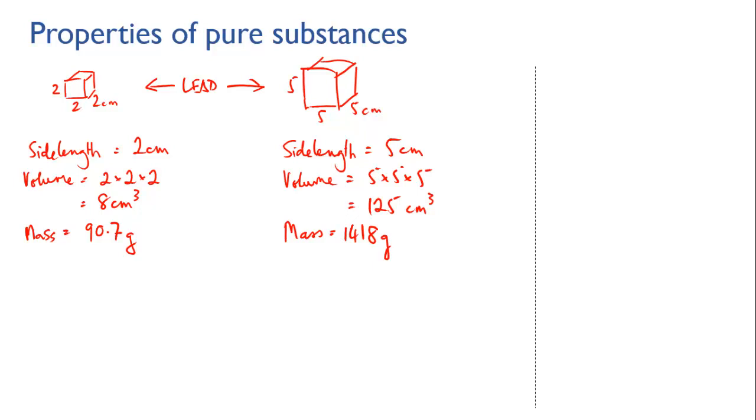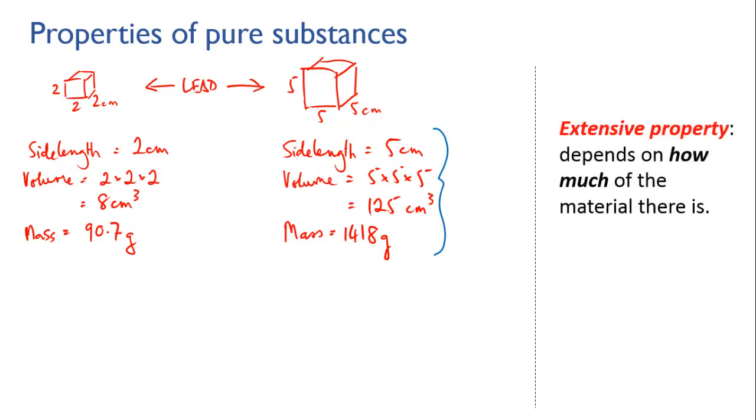Okay, so these blocks are made of the same material. They're both made of lead. But their side lengths and their volumes and their masses are different. This kind of property, where it depends how much of the substance is present, is called an extensive property. That's a property that's external to the substance itself, that's imposed on it by its form.